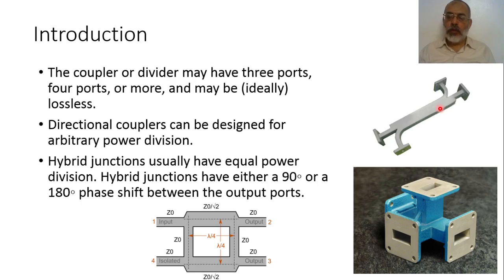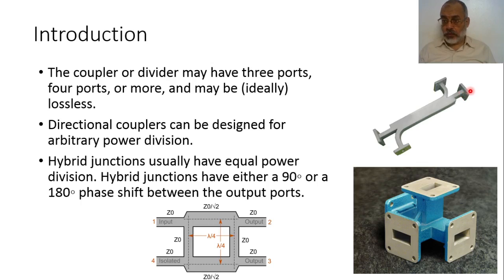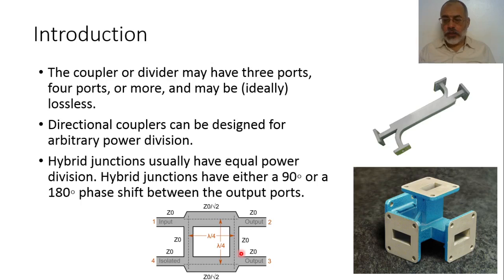Directional couplers can be designed for arbitrary power divisions. For example, if the power division is 20 dB, and the input power is 1 watt, then only 1/100 of a watt comes from the coupled port and 0.99 watts comes from the through port — the ratio between the transmitted signal and the sampled signal is 20 dB, or a factor of 100. Hybrid junctions usually have equal power division. Here are examples of hybrid junctions: a printed hybrid junction realized in microstrip or strip line, and another example based on waveguide sections.